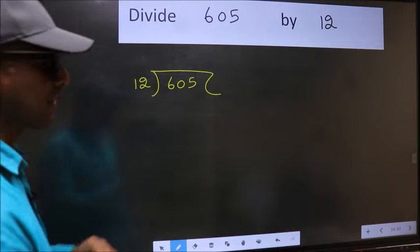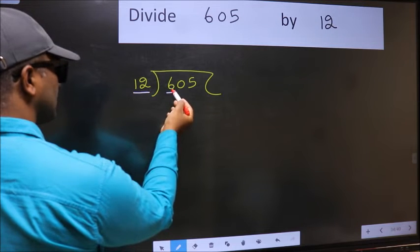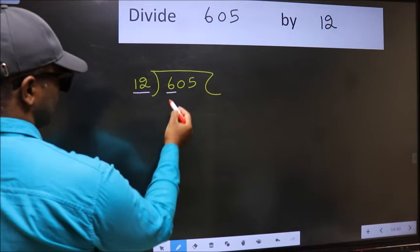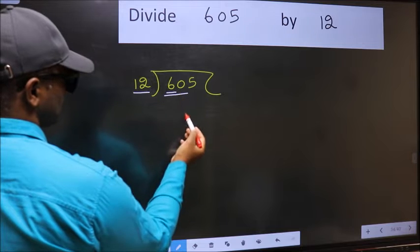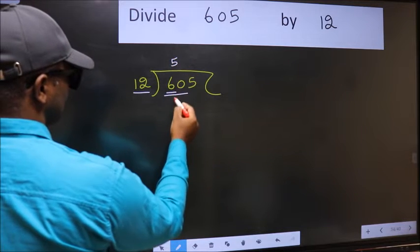Next, here we have 6 and here 12. 6 is smaller than 12, so we should take two numbers: 60. When do we get 60 in 12 table? 12 times 5 is 60.